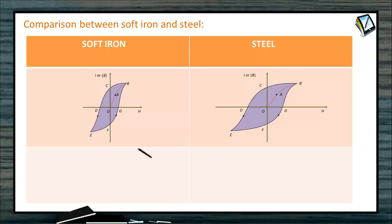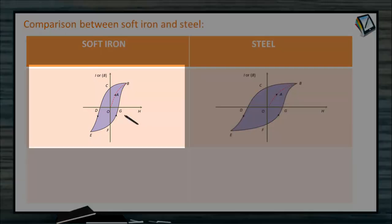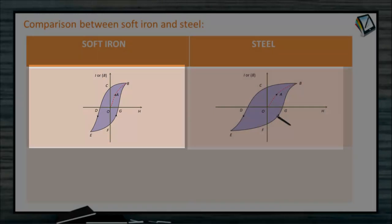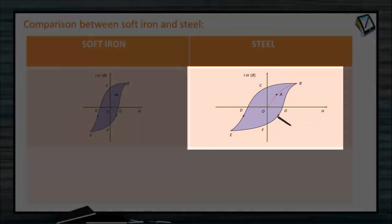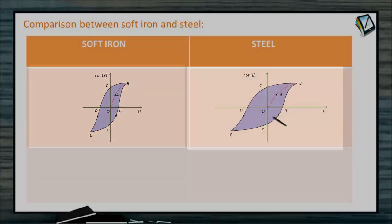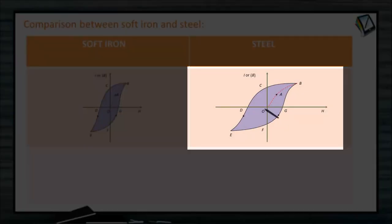Comparison between soft iron and steel. This is the hysteresis curve shown for soft iron and steel. For the path OAB the H field is increased, then BCDEFGB is the complete curve. For steel, OD is larger.